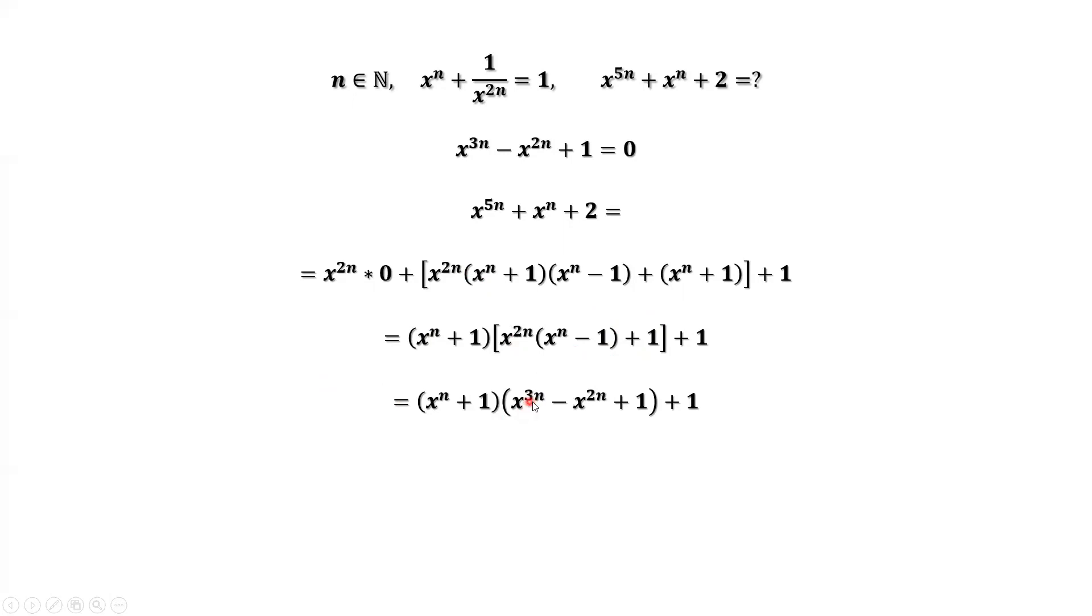x^(3n) - x^(2n) + 1, what is this? This is zero. Zero times (x^n + 1) is zero. So the final answer is 1. That's all. Thanks for watching and I'll see you next time.